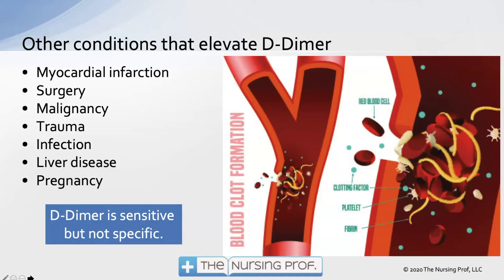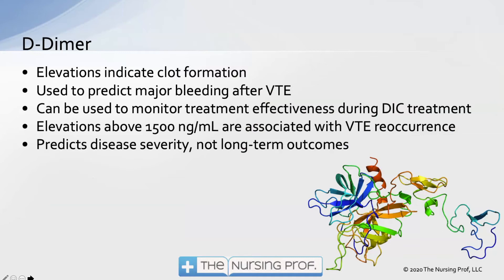However, D-Dimer is sensitive to telling you that there is a clot somewhere in the body. So let's say our patient presents with all the classic symptoms associated with a pulmonary embolism — doing a D-Dimer would be very helpful to tell us yes, there is a clot in the body, validating the pulmonary embolism. Elevations indicate clot formation, and we can use it to predict major bleeding after a patient has venous thromboembolism.